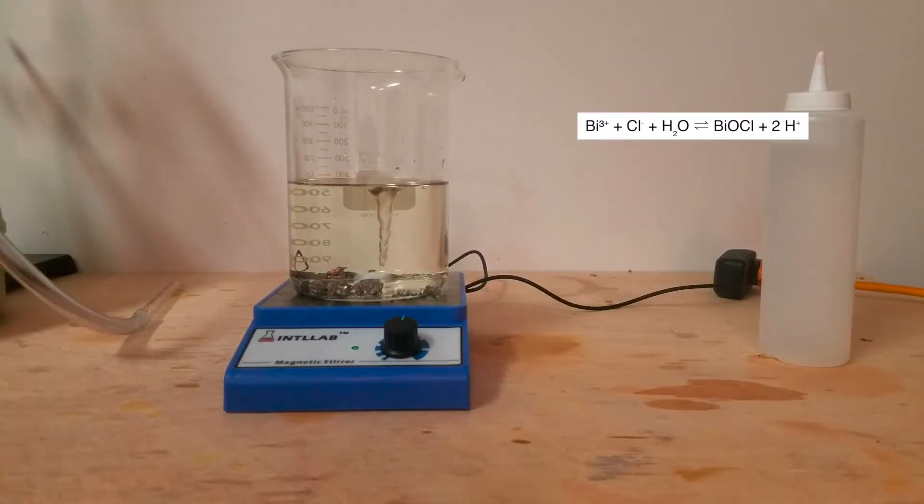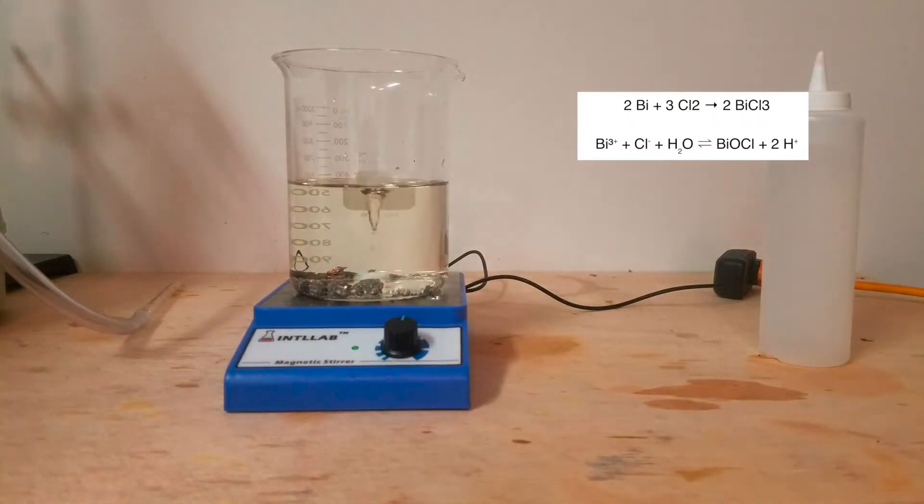Bismuth metal can react with chlorine ions in an atmosphere of oxygen to make bismuth chloride. This bismuth chloride can then react with water to form bismuth oxychloride and hydrochloric acid. This reaction is an equilibrium reaction, meaning that the products can react with each other to form the reactants. Because of this, we have to utilize Le Chatelier's law to favor the products of this equilibrium reaction, in this case the hydrochloric acid and bismuth oxychloride.